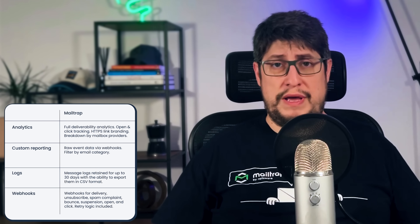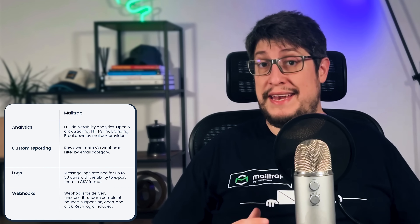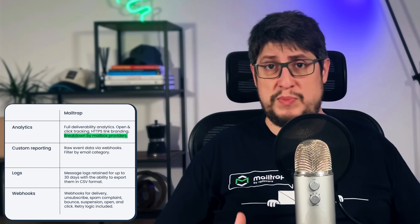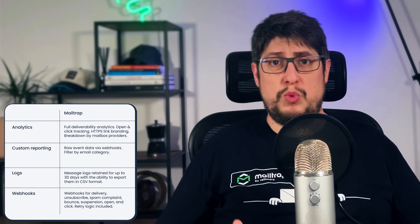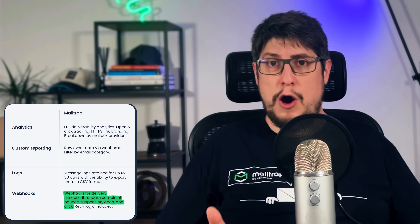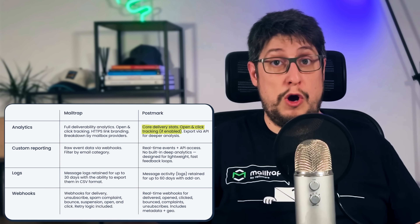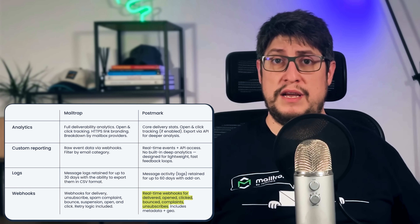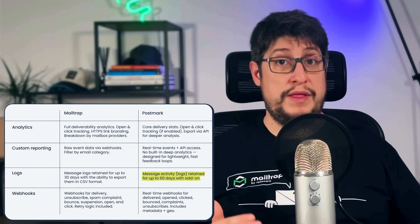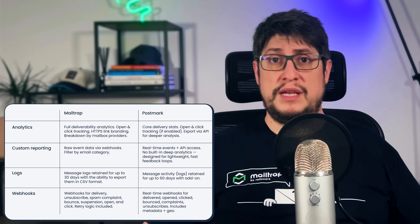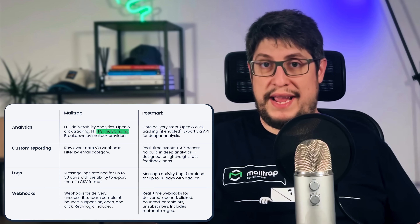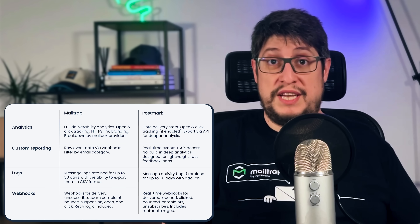Now let's talk about analytics and how you can track your email performance. MailTrap gives you helicopter-view dashboards, drill-down reports, and industry-best analytics to monitor deliverability and engagement. You get open-and-click tracking, full deliverability analytics, branded HTTPS links, custom domains for link tracking, and even breakdowns by mailbox provider. Logs are stored for up to 30 days. MailTrap also provides robust webhook support for delivery, bounce, unsubscribe, spam complaint, open, and click events — with built-in retry logic. Postmark offers delivery stats and optional open-and-click tracking, primarily through its webhook API. Webhooks can be configured per stream and cover key events like delivery, bounce, spam complaint, open, click, and unsubscribe. Logs are stored for up to 60 days with an add-on. Both platforms offer detailed webhooks with retry logic, but MailTrap goes further with richer built-in analytics, branded link tracking, and mailbox provider breakdowns — giving you deeper insights right away with no extra setup needed.